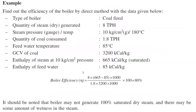Looking at an example problem to find the efficiency of a boiler by the direct method: the boiler is coal-fired, quantity of dry steam generated is 7 tons/hr, steam pressure is 10 kgf/cm² at 180°C, quantity of coal consumed is 1.8 tons/hr, feed water temperature is 85°C, gross calorific value of coal is 3200 kcal/kg, enthalpy of steam at 10 kgf/cm² is 665 kcal/kg, and enthalpy of feed water is 85 kcal/kg.